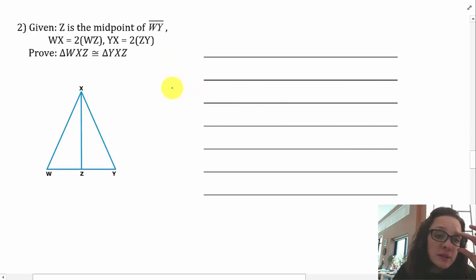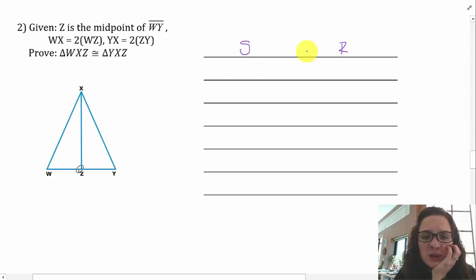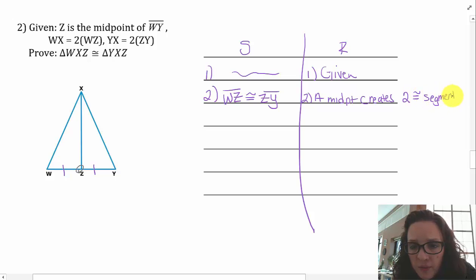Alright, this is the last one I'm doing with you. Read it. Z is the midpoint of WY. I'm going to fill a dot there. WX is two WZ. YX is two ZY. Prove the triangles. I think I can handle this. So let's see. If I can handle this, I feel like writing in purple. So I have my statements. I have my reasons. And I'm going to start with my givens. And then let's see. Z is the midpoint of WY. So this is in the middle. So if that's a midpoint, these two parts have to be equal. That's what a midpoint does. So WZ is congruent to ZY because a midpoint creates two congruent segments.